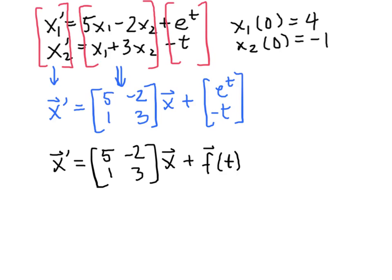Okay, so we could also write this as x' = Ax, where A is again the matrix [5 -2; 1 3], plus f(t).